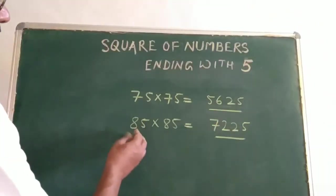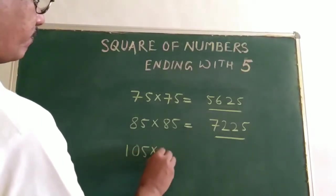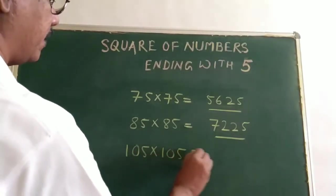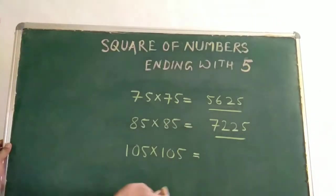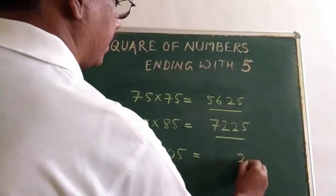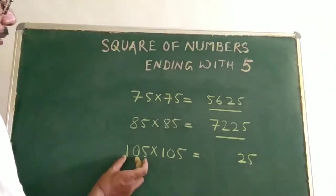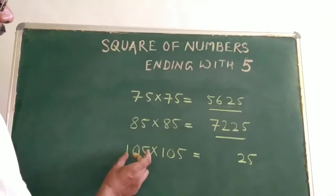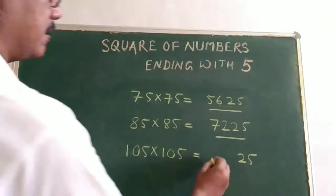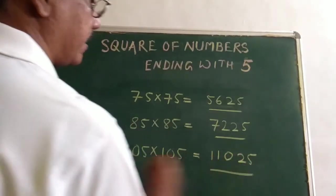Suppose there is a 3-digit number: 105. We have to find out the square of 105. In the same way, the first number is 5, so we write down 25. The square of 5 is 25. Now the remaining number is 10. What is the next number after 10? That is 11. So 10 multiplied by 11 is 110. So the answer is 11,025.